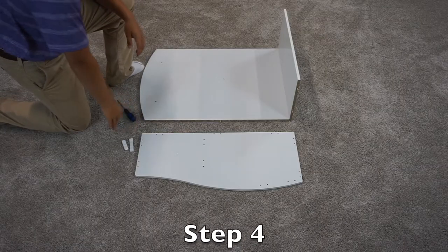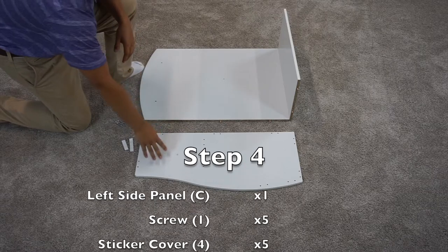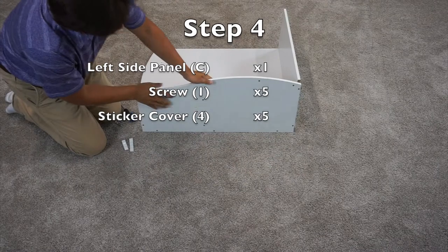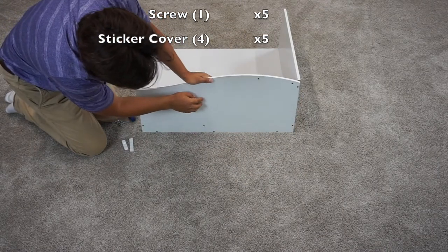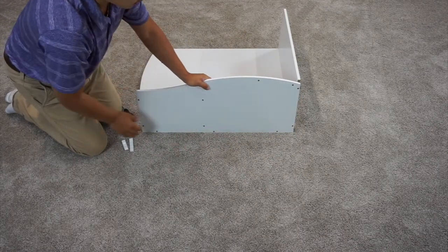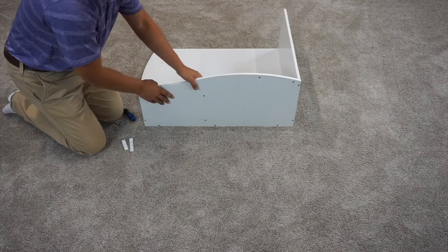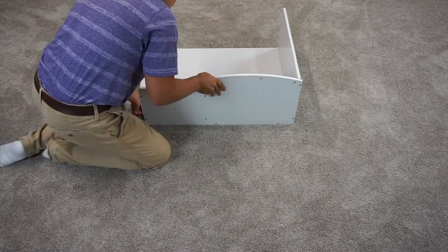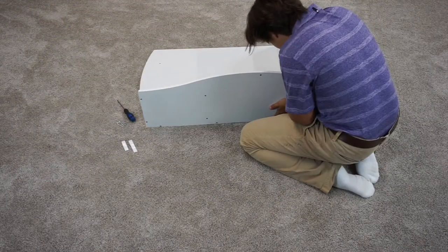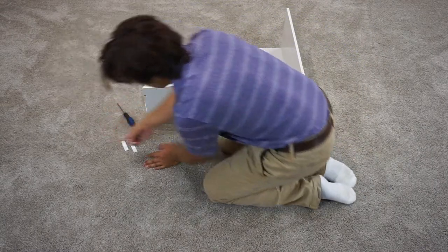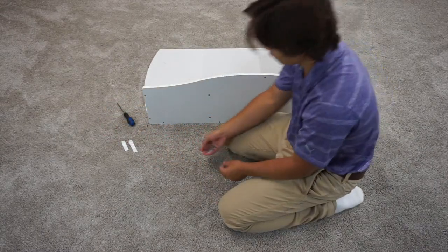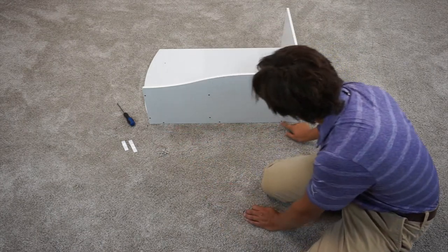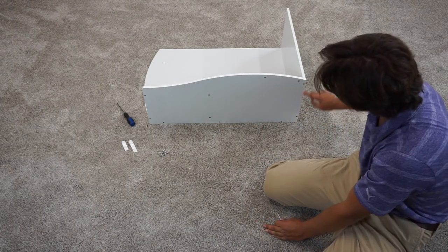For step four you're going to want to keep this structure that we just built and grab your C panel. Align your C panel so that this side with a little bit of an indented hole is facing out away from the structure. This will allow the screw head to rest flushly inside. And then you will want to grab five of these longer screws and screw them into the bottom three holes and then these two side holes.